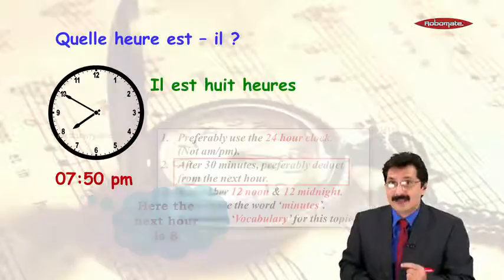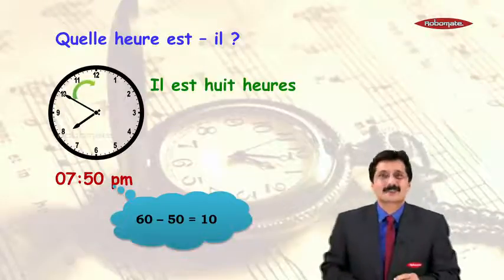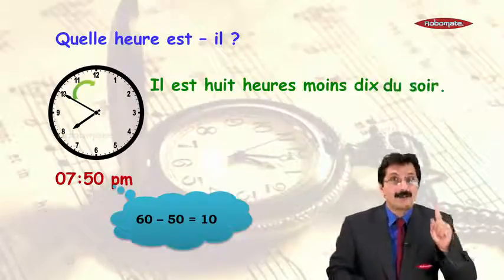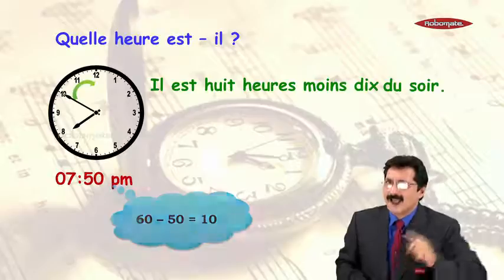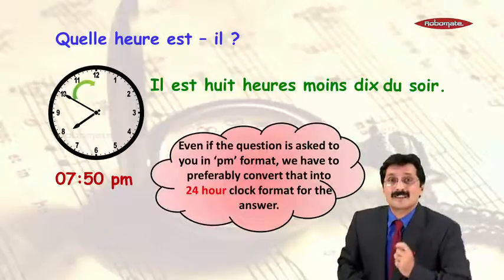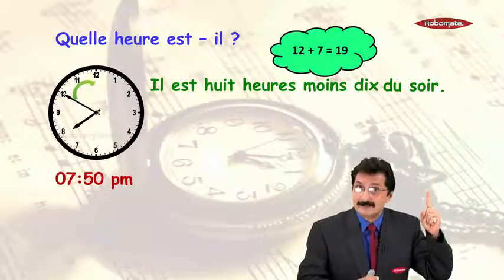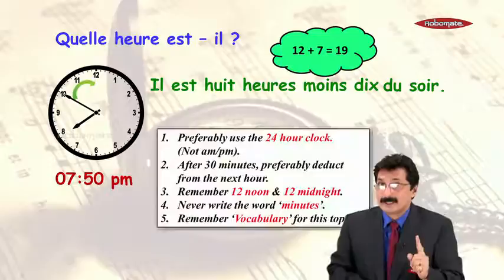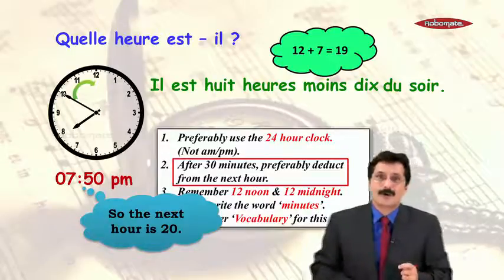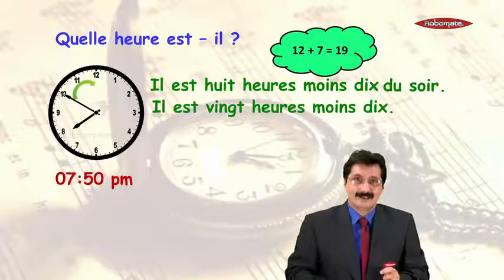Let's write it down. 60 minutes minus 50 minutes equals 10 minutes. But as I have told you, the French prefer to convert to the 24-hour format. So 12 plus 7 equals 19 in 24-hour format — but wait, the next hour is not 19, it is going to be 20. So the answer is 'il est vingt heures moins dix'.